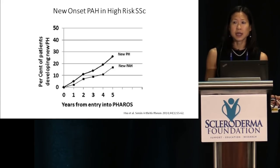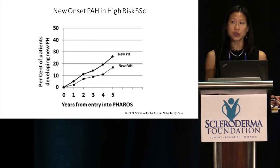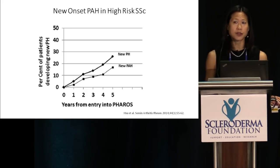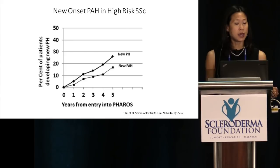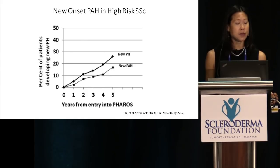The PHAROS Registry is a multi-center U.S. registry of scleroderma patients at high risk for developing pulmonary hypertension, started by Virginia Steen in 2006. This graph shows patients who are at high risk based on echo and pulmonary function test parameters. About 10 percent developed pulmonary hypertension at two years, 13 percent at three years, and 25 percent at five years. For pulmonary arterial hypertension specifically, incidence was about 9 percent at three years and 17 percent at five years.